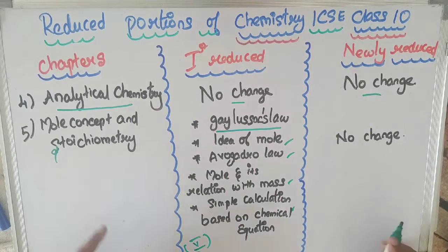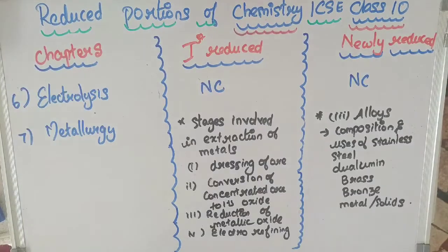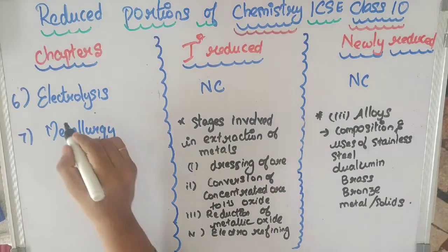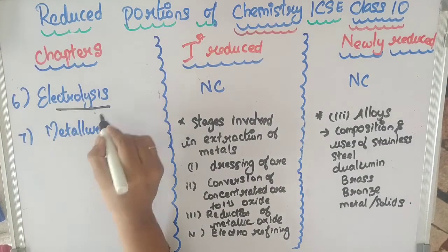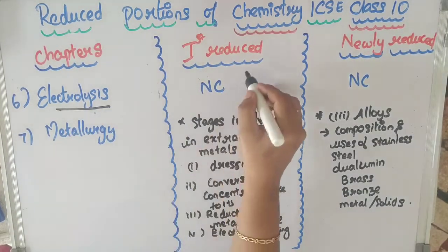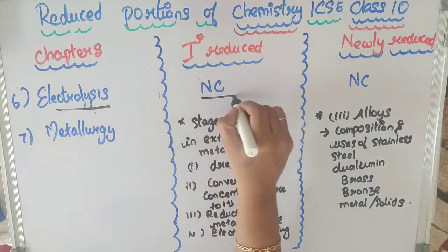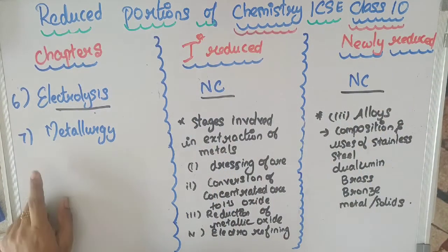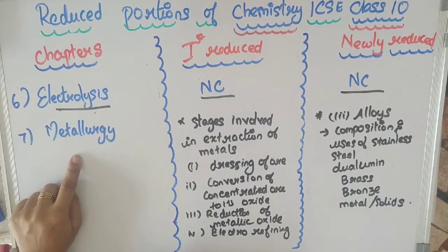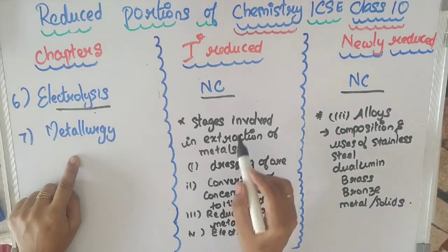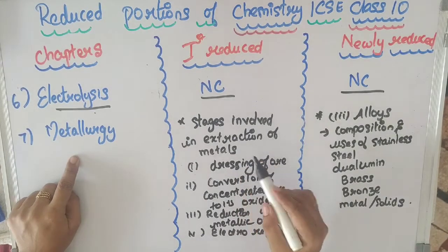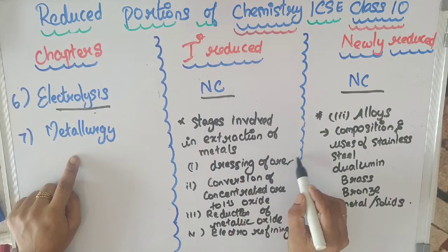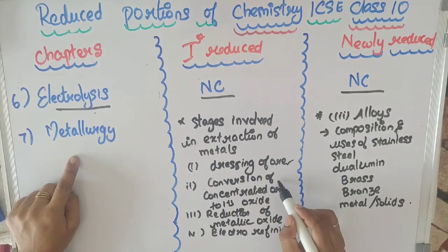In the sixth chapter, Electrolysis, there is no change in either the first or second reduction. In the seventh chapter, Metallurgy, during the first reduction the topic 'stages involved in extraction of metals' was completely removed — all four stages.